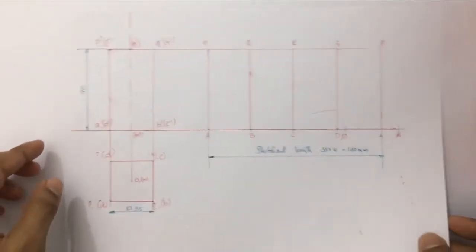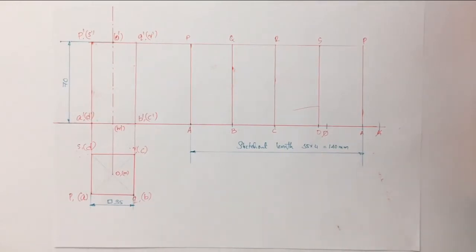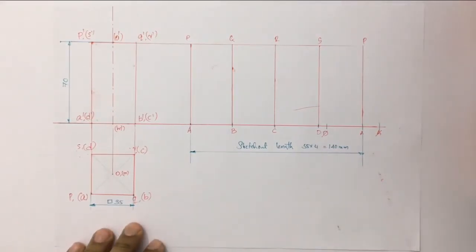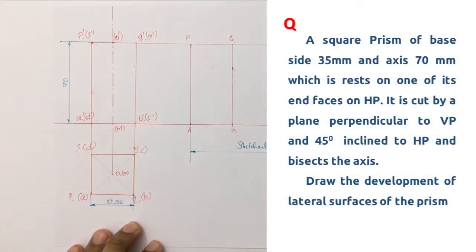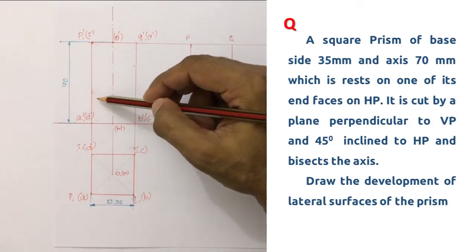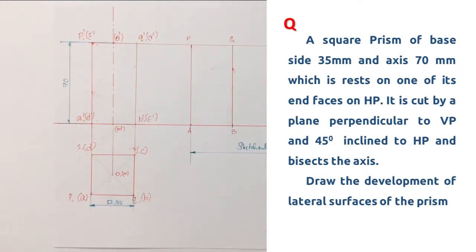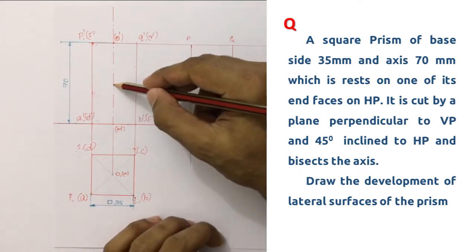In the first session, we found the development and pattern of a square prism. Now we look at the truncated solid version — that means we have a section plane which cuts through it. The problem: I have a square prism of base side 34.5 mm and axis 70 mm, which rests on one of its end faces on HP. It is cut by a plane which is perpendicular to VP and 45 degrees inclined to HP, bisecting the axis — meaning the section plane passes through the midpoint of the axis.